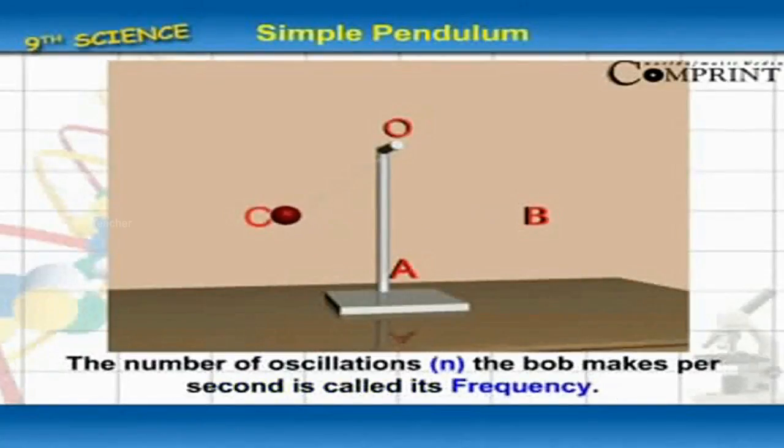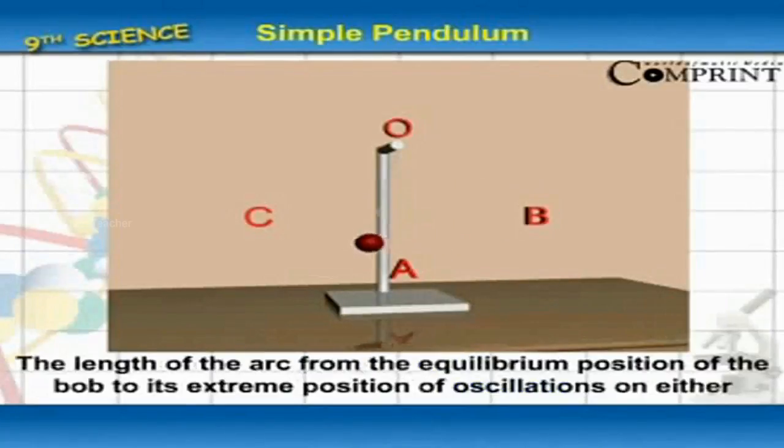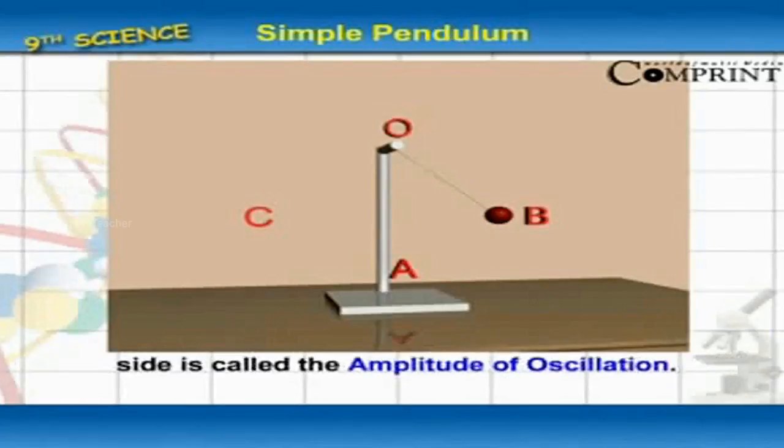The number of oscillations N the bob makes per second is called its frequency. The length of the arc from the equilibrium position of the bob to its extreme position on either side is called the amplitude of oscillation.